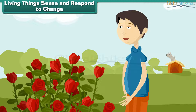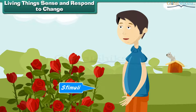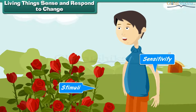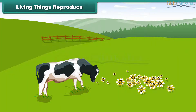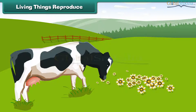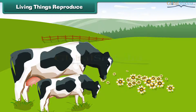Living things sense and respond to change. Consciousness is awareness of the surroundings and responding to external stimuli. The ability of an organism or organ to respond to external stimuli is called sensitivity. Living things reproduce — young ones grow and become mature, and they develop the faculty to produce young ones of their own type. Life comes from pre-existing life.